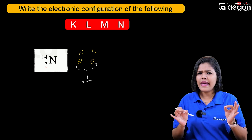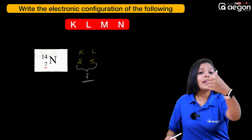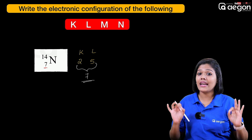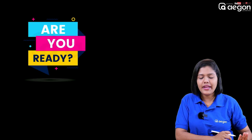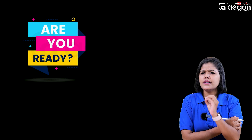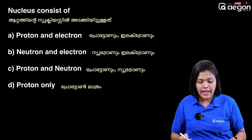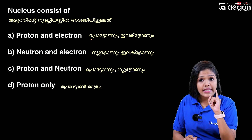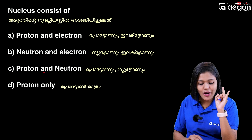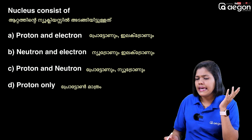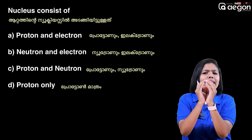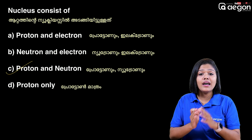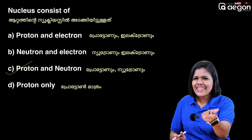In electronic configuration, we will give you the atomic number. This is basic and very useful. In our first chapter, it is very helpful. If you are ready, we will give you a few questions. Let's try it. Nucleus consists of proton and electron; neutron and electron; proton and neutron; or protons only. The correct answer is proton and neutron. That is the answer.